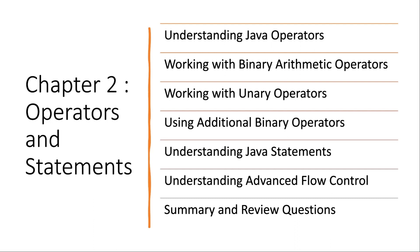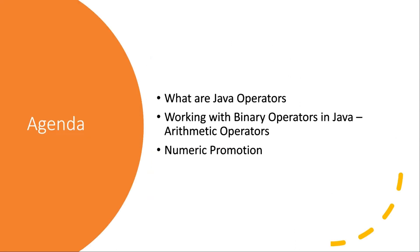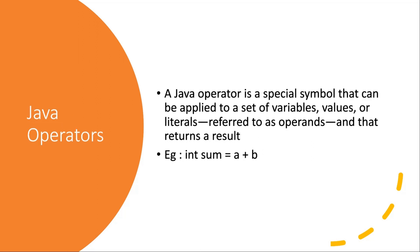In this particular video we are going to talk about Java operators, binary operators in Java, and numeric promotion — very important topics. A Java operator is a special symbol that can be applied to a set of variables, values, or literals. They are applied to something known as operands. For example, in 'a + b', a and b are operands and plus is the operator.